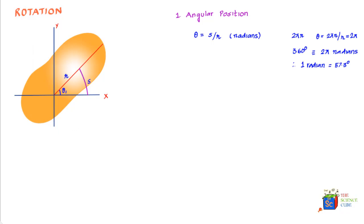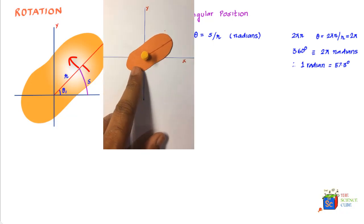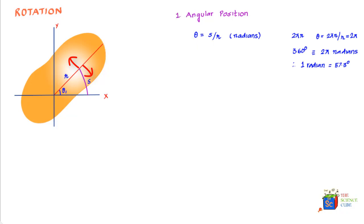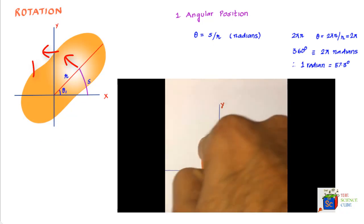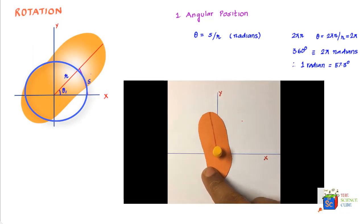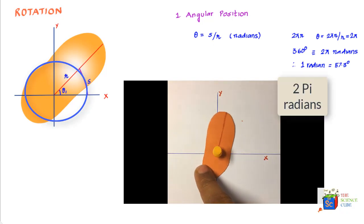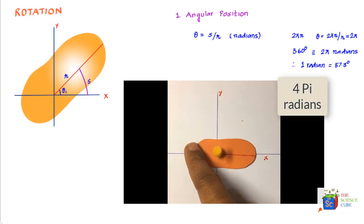The angular position of the reference line at any time is theta_1. As the body rotates, angular position increases if moving anti-clockwise and decreases if moving clockwise. Importantly, if the angular position reaches 2π radians we do not reset it to 0. If the rigid body completes one full circle and continues to make another circle, the new position is 4π radians because it has completed two full circles.